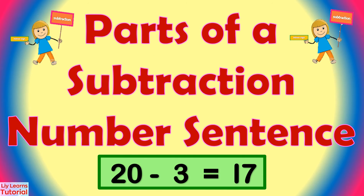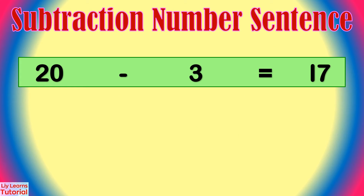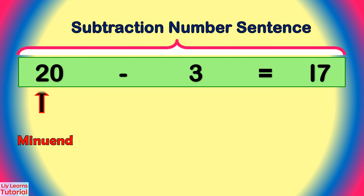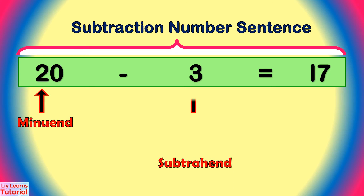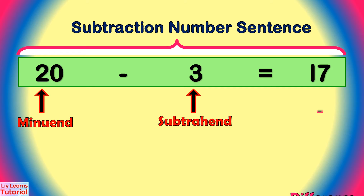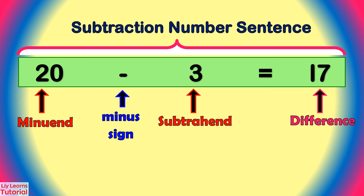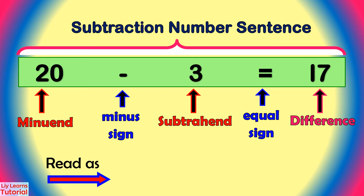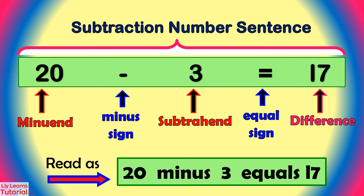Let's look at the parts of a subtraction number sentence. This is a subtraction number sentence. 20 is the minuend. 3 is the subtrahend. 17 is the difference. This is a minus sign, and this is an equal sign. We can read this as 20 minus 3 equals 17.